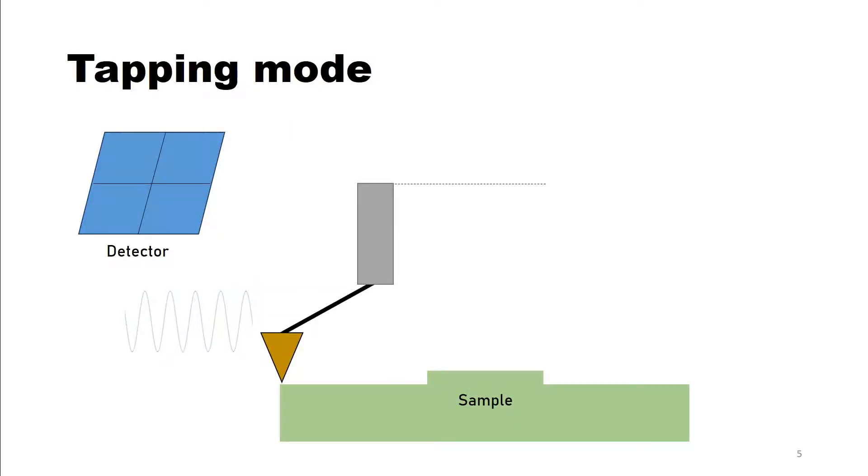In tapping mode the probe gives light taps on the surface of the sample. The amplitude of this oscillation depends on the bending of the cantilever. It is also measured with a laser beam similar as it is for the contact mode.